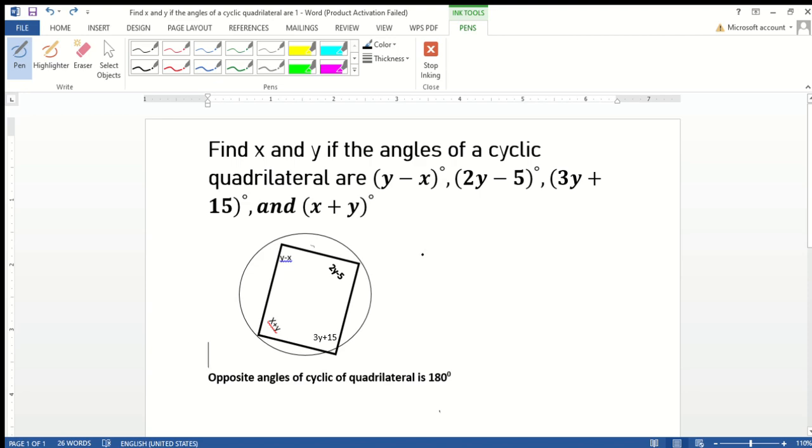Hello, good day. Now let's take a look at this question. Find x and y if the angles of a cyclic quadrilateral are (y - x), (2y - 5), (3y + 15), and (x + y).